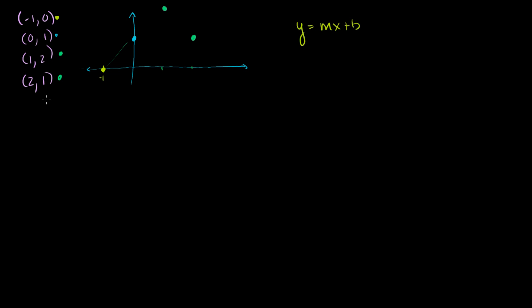So I've got four Cartesian coordinates here. The first one is minus 1, 0 — that's this point right there. The next point is 0, 1, which is that point right there. Then the next point is 1, 2, which is that point right up there. And then the last point is 2, 1, which is this point there.